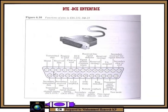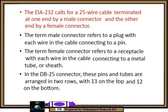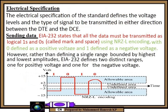So these are the 25 pins — 13 slots configured on top and 12 on the bottom. EIA-232 calls for a 25-wire cable terminated at one end by a male connector and the other end by a female connector. The term male connector refers to a plug with each wire in the cable connecting to a pin. The term female connector refers to a receptacle with each wire connecting to a metal tube or sheet. In the DB25 connector, these pins and tubes are arranged into rows with 13 on the top and 12 on the bottom.